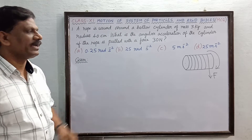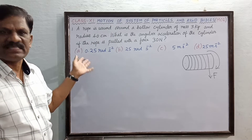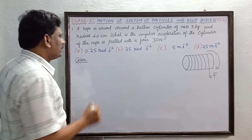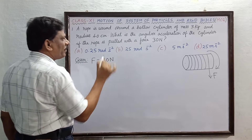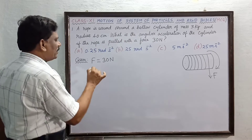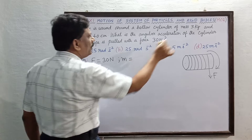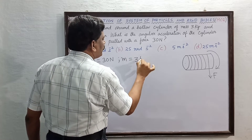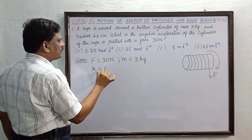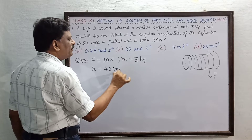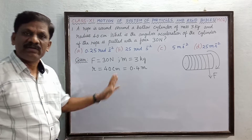So what is the angular acceleration is the question. Let me summarize the given quantities first. The force is given as F = 30 N. The mass is given as M = 3 kg. And the radius is given as 40 cm, which is also equal to 0.4 m in SI units.